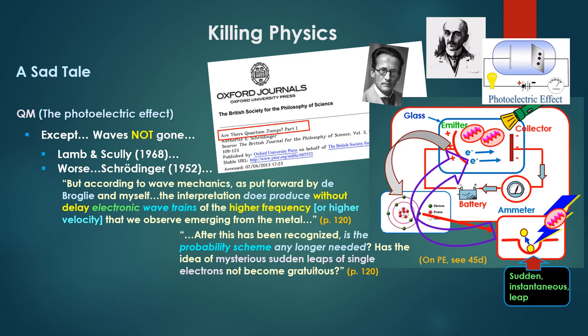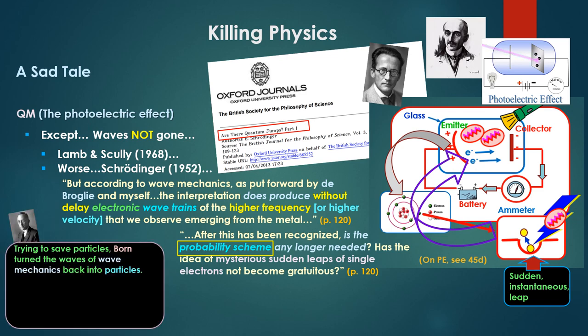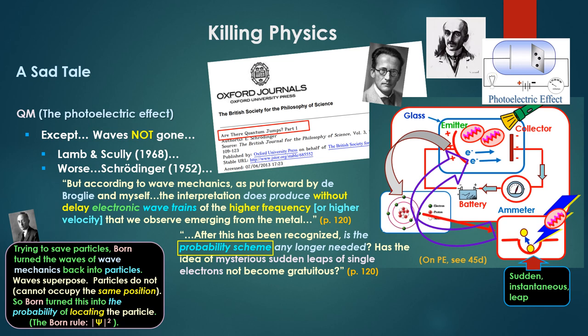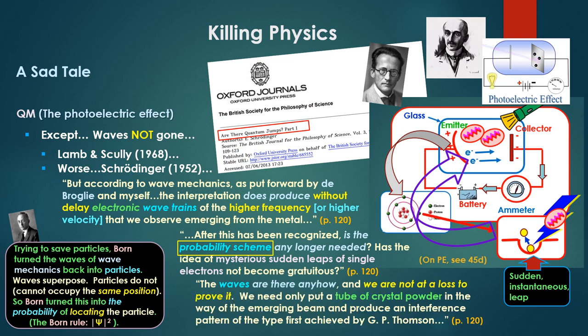That's what he's referring to there. So he says, no, he says wave mechanics can explain this without, you know, after this has been recognized. He says, is the probability scheme any longer needed? Is the idea of mysterious sudden leaps of single electrons not become gratuitous? Notice what's he mean, the probability scheme? Well, it's this: trying to save particles. Born turned the waves of wave mechanics back into particles. 1926, the same year wave mechanics was born. Waves superpose naturally. Particles do not. They cannot occupy the same spatial position. So Born turned this into the probability of locating the particle, the Born rule, taking the square of psi.